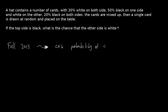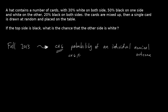It deals with the probability of an individual nominal outcome. Now what do I mean by this, and why is this important? Whenever you see the word probability, that could be Chapter 6, 7, 8, or 9. So there are lots of different chapter techniques that could be applied to probability questions, and I want to be able to narrow it down.